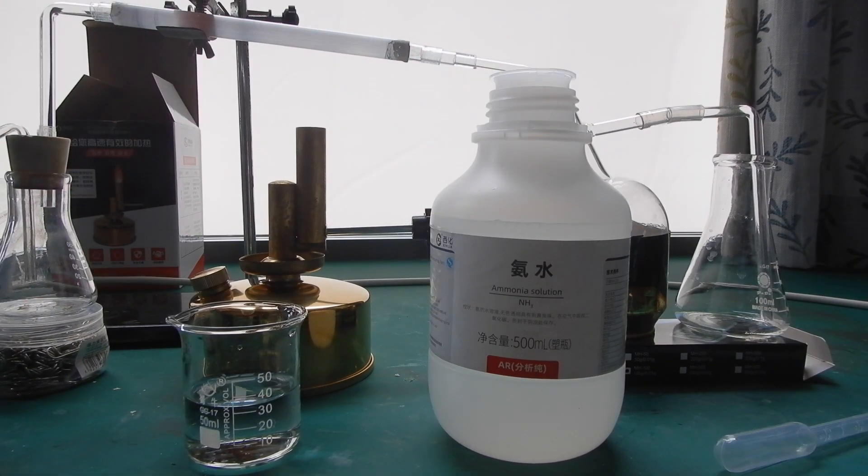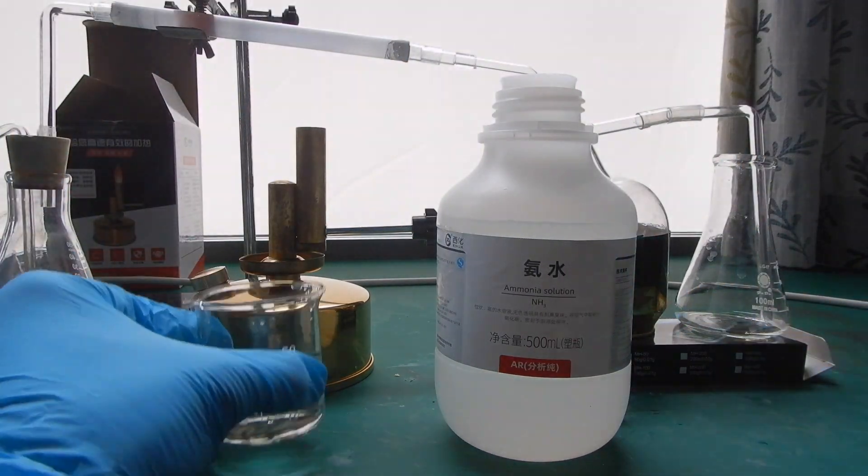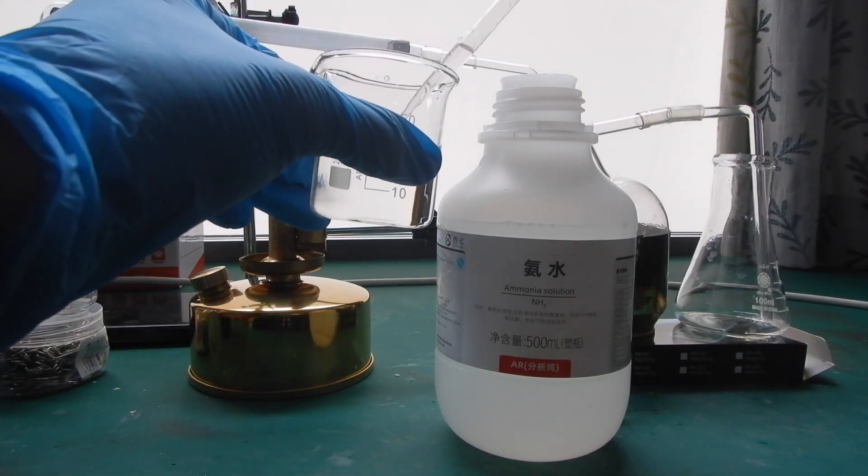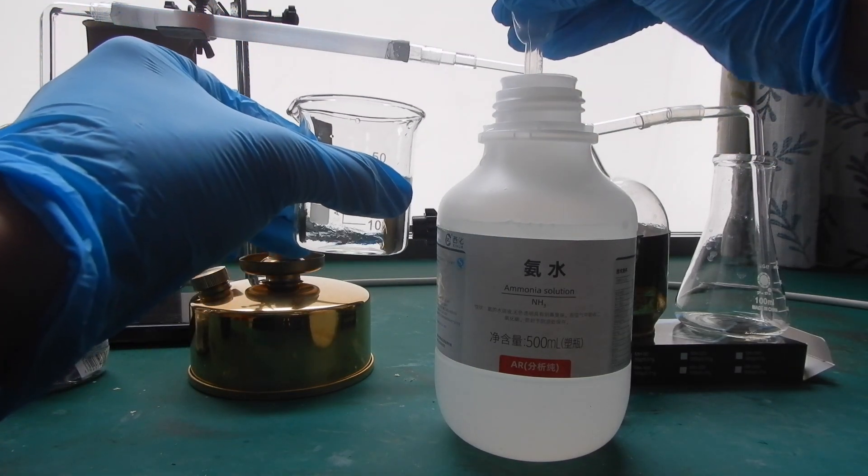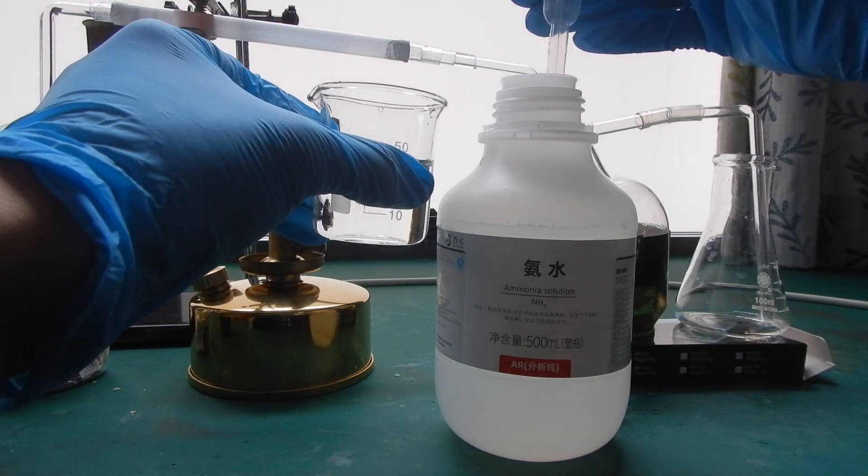Measure out 17 milliliters of concentrated ammonia, which has a mass percentage of around 25% ammonia. Then mix this with an additional 34 milliliters of water to make roughly 50 milliliters of dilute ammonia. Pour this into the conical flask.